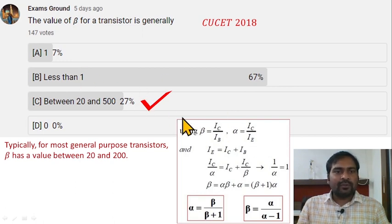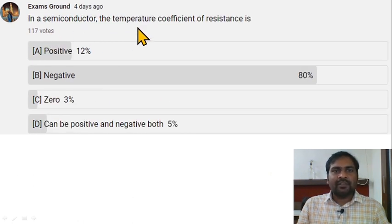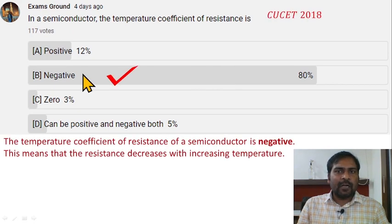In a semiconductor, the temperature coefficient of resistance is negative. Option B is correct here. That means the resistance decreases with increasing temperature.